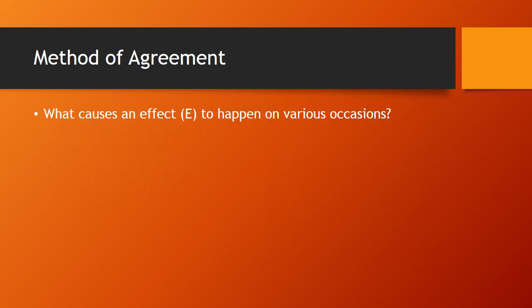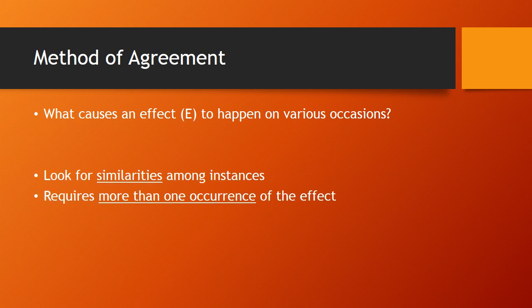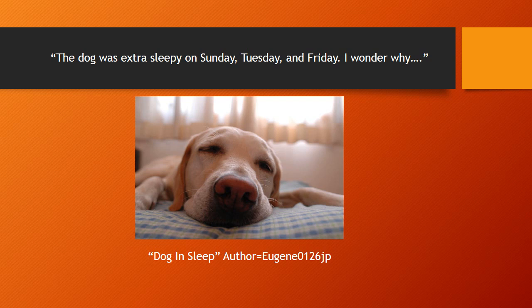Let's take a look at Mill's method of agreement reasoning. In method of agreement reasoning, we're looking at multiple occurrences of an effect, and we're trying to figure out what causes that effect to happen on all those different occasions. In essence, we're looking for similarities among all these instances. In order to look for similarities, we of course need more than one occurrence of the effect. The dog was extra sleepy on Sunday, Tuesday, and Friday.